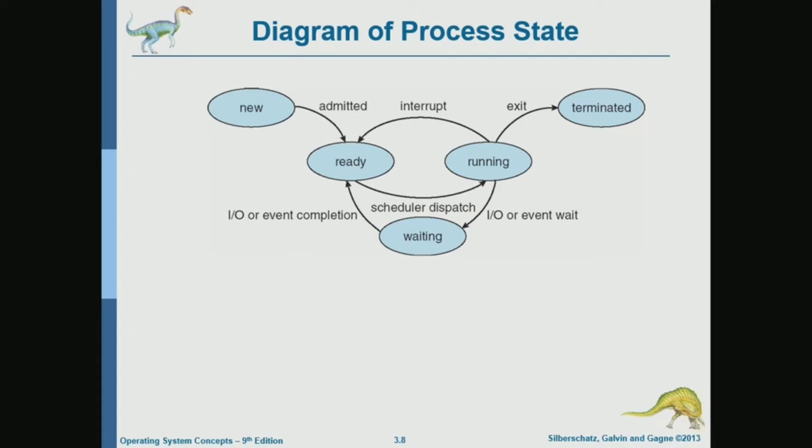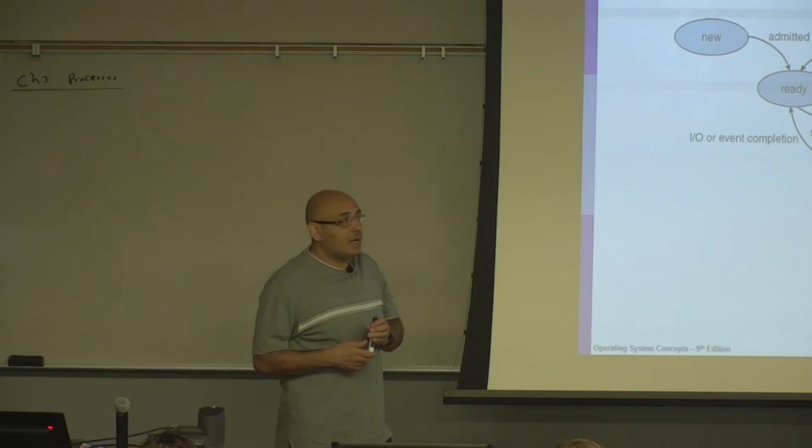So the process is running. When a process is running, different things can happen. One possible event is just normal termination. If a process just terminates, comes to its end and terminates, it will be in the terminated state. A process may request IO. If a process requests IO, then the system will put it in the waiting state. So it will be in the waiting state until... until that IO completes, that IO request, until the device completes processing that IO request.